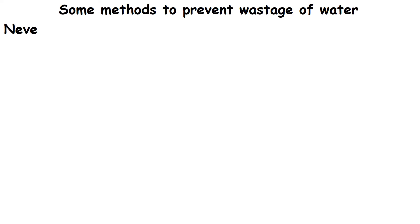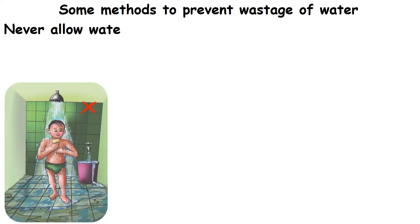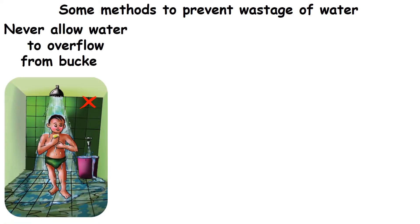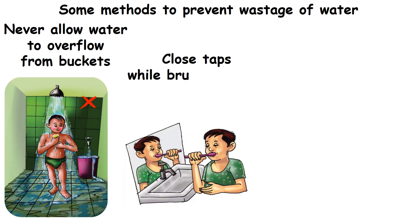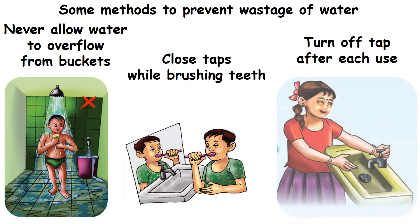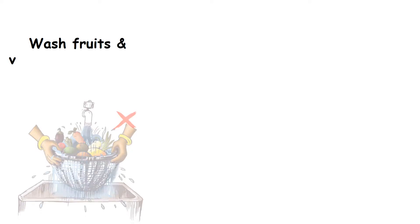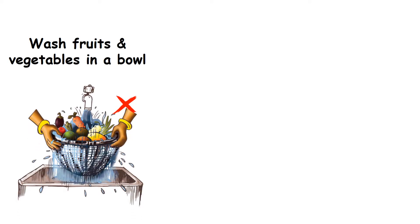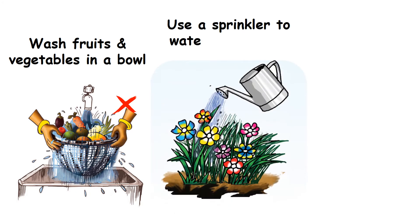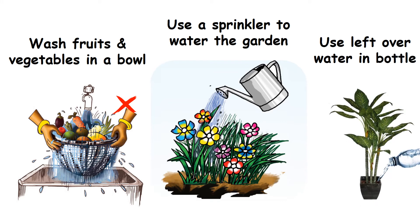Some methods to prevent wastage of water: Never allow water to overflow from buckets. Always close the taps while brushing your teeth. Turn off the tap after each use. Wash fruits and vegetables in a bowl of water and not under running tap water. Use a sprinkler to water the garden. Use leftover water in your water bottle to water a potted plant.